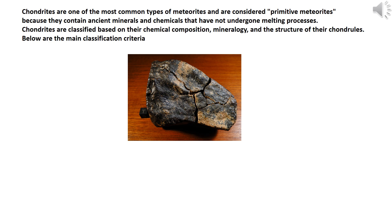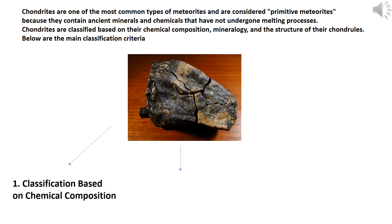Chondrites are one of the most common types of meteorites and are considered primitive meteorites because they contain ancient minerals and chemicals that have not undergone melting processes. Chondrites are classified based on their chemical composition, mineralogy and the structure of their chondrules.